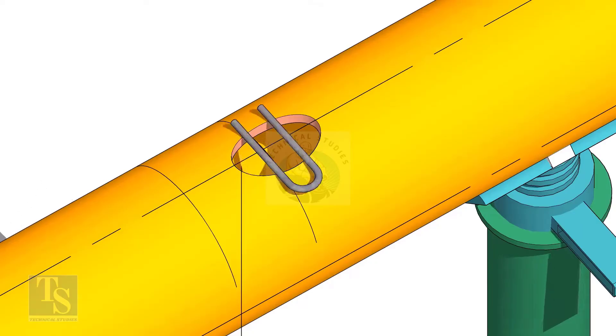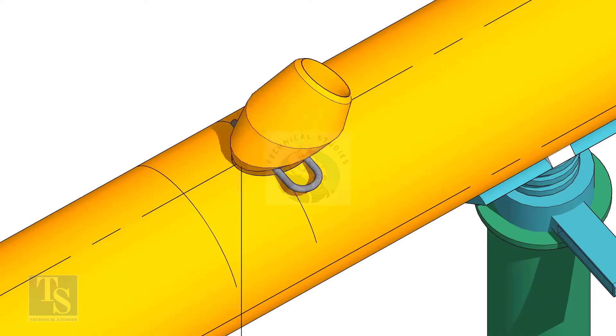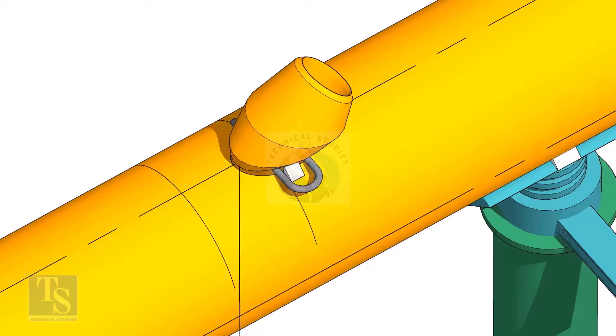Cut and clean the opening on the header. Put the Lateralette on the center of the hole. Tack weld on one side.